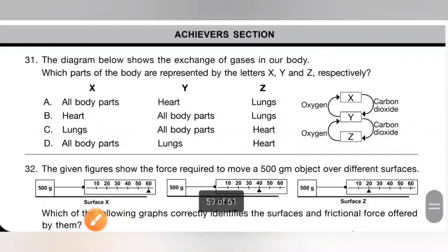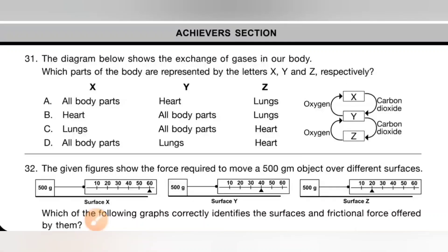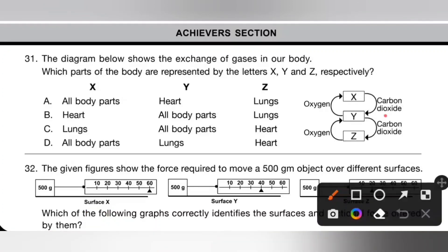Next, the achiever section. Question 31: The diagram shows the exchange of gases in the body. Y is the heart, which supplies oxygen to all parts. X represents all body parts. Z is the lungs, which supply oxygen to the heart and receive carbon dioxide. So option A is the correct answer.